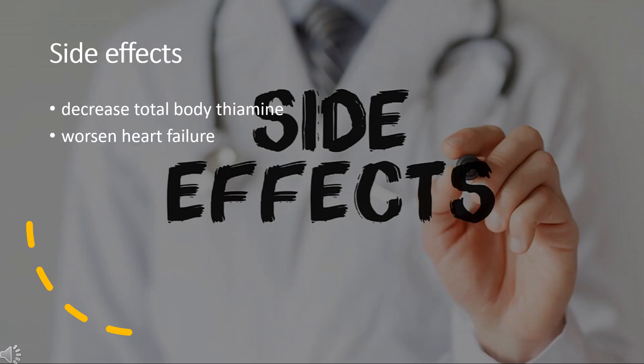Side effects: Loop diuretics, including torsemide, may decrease total body thiamine, particularly in people with poor thiamine intake, and this depletion may worsen heart failure. It is therefore reasonable to either give thiamine supplements or check blood thiamine levels in those being treated with chronic loop diuretics.